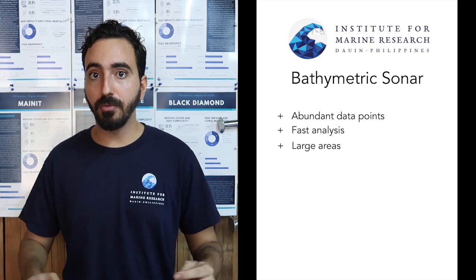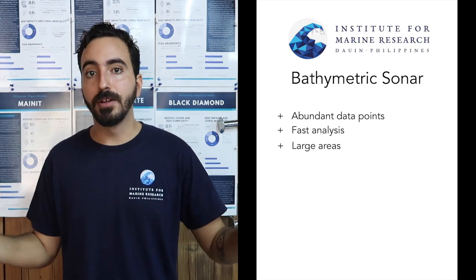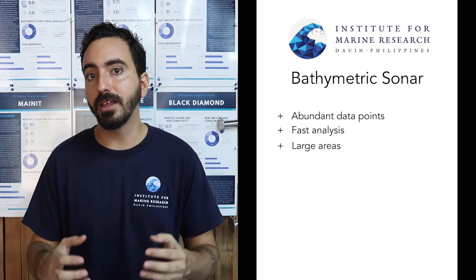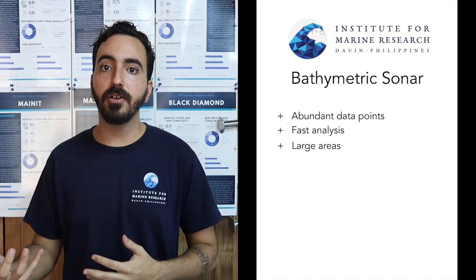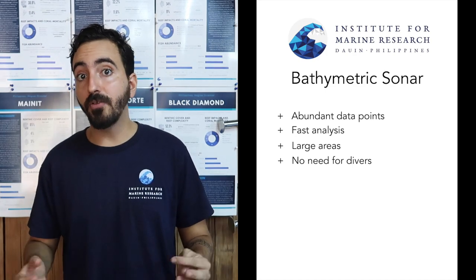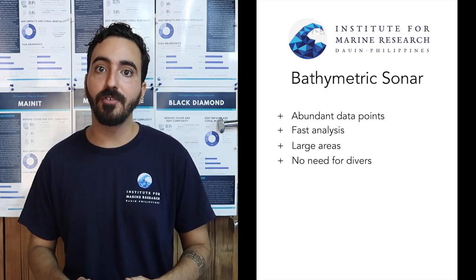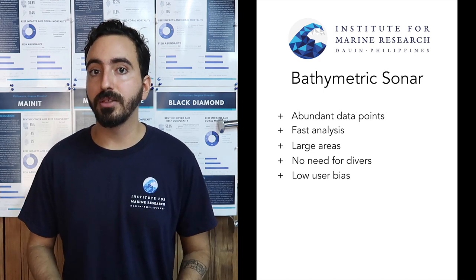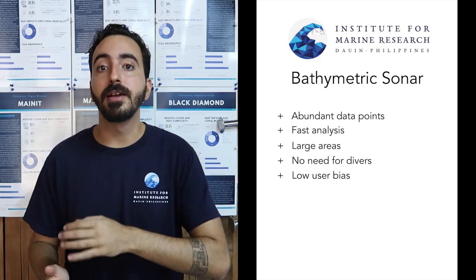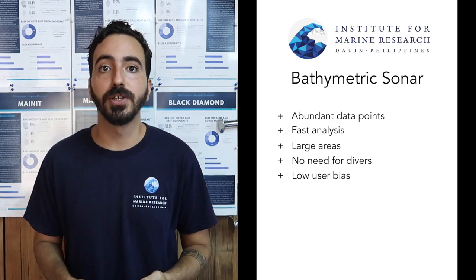It can also cover large areas. Bathymetric sonars can be used to plan shipping routes, meaning you're going over huge kilometer- to hundreds-of-kilometer-wide areas of ocean and mapping it out. Obviously, the bigger the area, the less exact and less fine-scale the measurements are. But the higher-end sonars can actually go fine scale as well, which is really cool. There's also no need for divers, so no need for anyone to get in the water. When you're short on time and need to cover large areas, this is definitely the kind of methodology you want to use. Finally, it has little to no user bias — it doesn't matter who's driving the boat; if they're driving the same transect, the data is going to look very much the same.